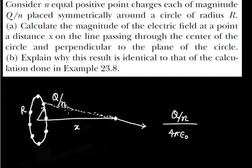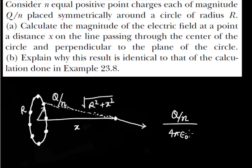So what is this distance? If this distance along the axis is x and the radius is r, then the distance from the charge to the point is √(r² + x²). So the electric field due to one point charge is (Q/n) divided by 4πε₀(r² + x²).